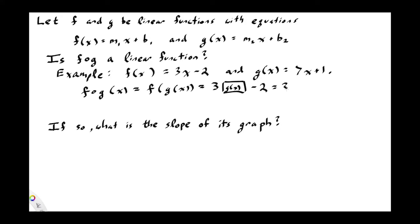That's 3 times g(x) minus 2. And g(x) is 7x + 1. So that's 3 times (7x + 1), in parentheses to keep it grouped, minus 2. Simplifying: 3 times 7x is 21x, 3 times 1 is 3, minus 2, and that equals 21x + 1.